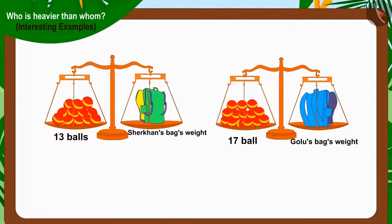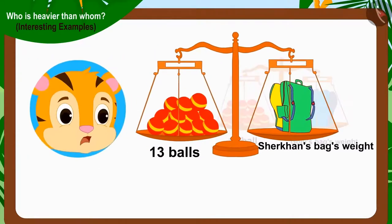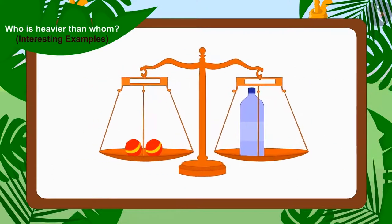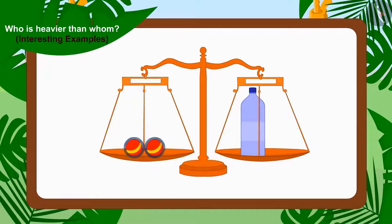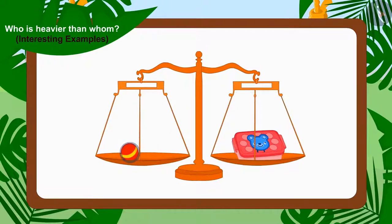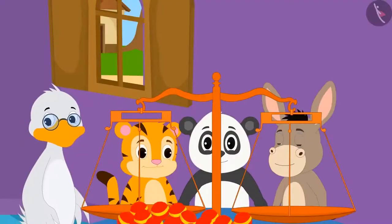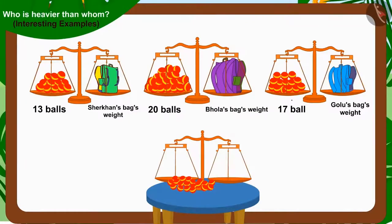And whose bag is the lightest? Sheer Khan's bag is the lightest, because the number of balls equal to his bag's weight is thirteen, which is the smallest number. Children, can you look at these scales and tell which of these two items is heavier? The water bottle weighs two balls and the tiffin box weighs one ball, so the weight of the water bottle is more than the weight of the tiffin box.